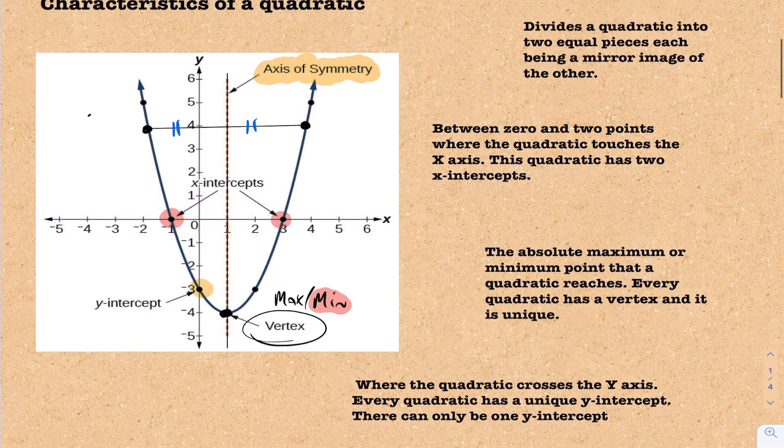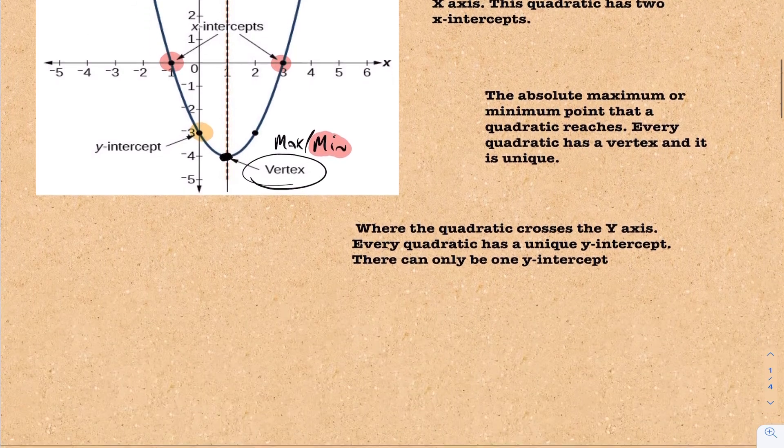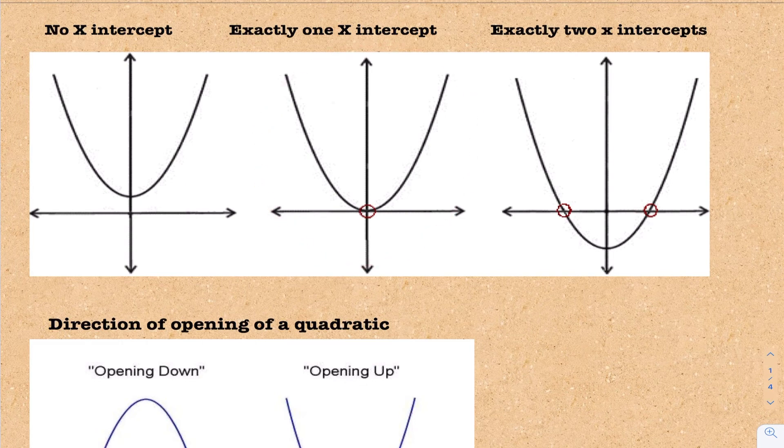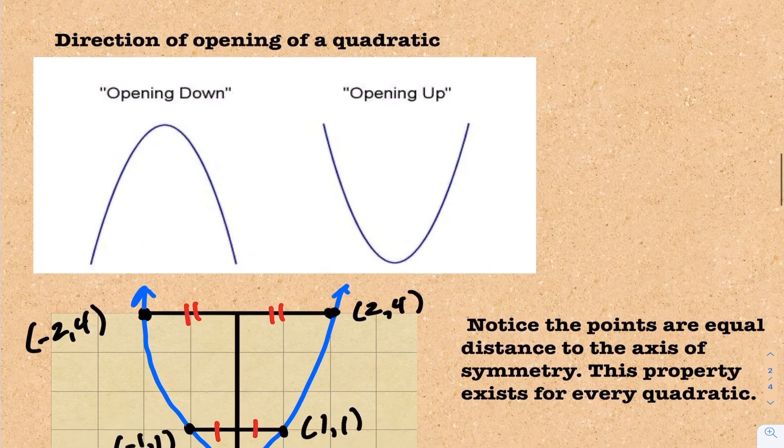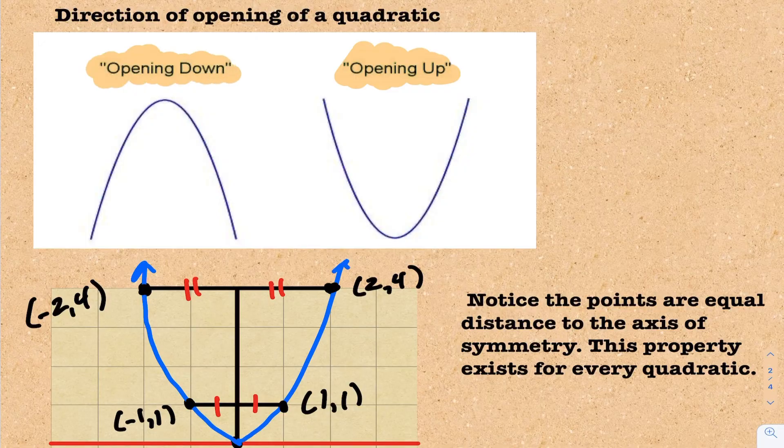just kind of illustrating what we've been talking about here. Here's a situation of a quadratic that opens upwards, has no x-intercepts. Here's an example of a quadratic that has exactly one x-intercept, and this is an example of a quadratic with two. So you have three options now that you didn't have for linear relations, and again, like the terminology we've been talking about, quadratics can open upwards, as we saw, and you can also have quadratics that open downwards.